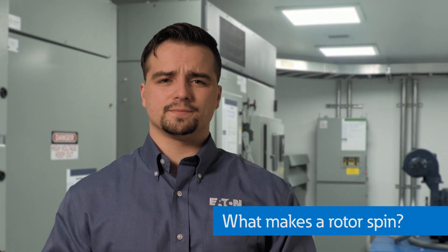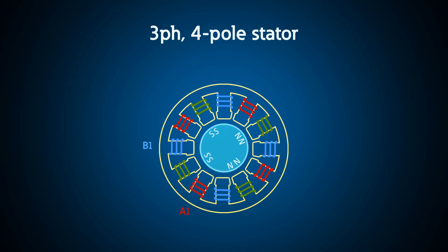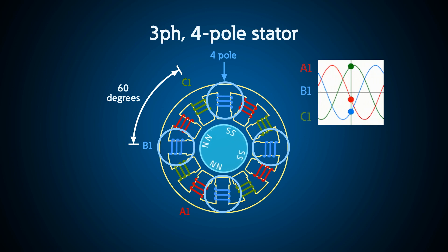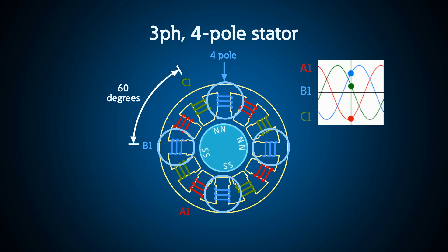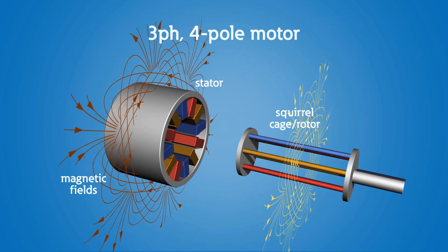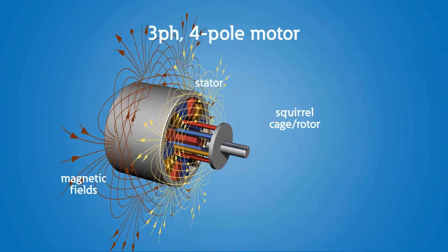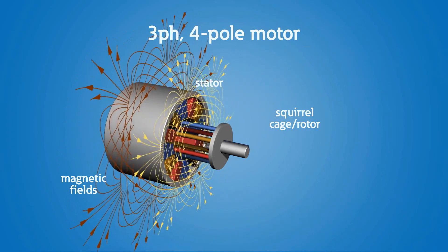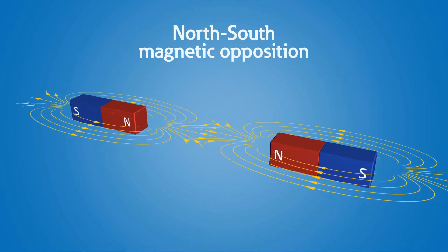But first, what makes the rotor spin? For a three-phase motor, the electric power energizes the three stator coils, one for each phase. These coils are evenly spaced around the stator 60 degrees apart for a four-pole machine. Three phases alternating 120 degrees apart electrically results in a rotating magnetic field. This magnetic field induces a current on the conductive squirrel cage rotor — this is where the induction motor gets its name. The current that flows through the squirrel cage produces a magnetic field that opposes the magnetic field produced by the stator windings. These magnetic fields oppose each other just like the north poles of two magnets, but because the fields are spinning, we get a rotation in the rotor.